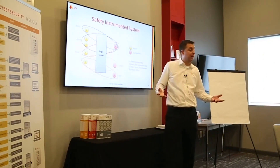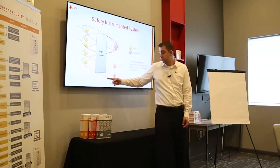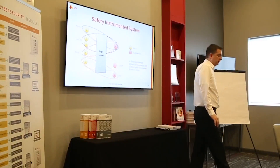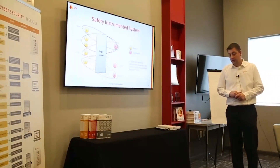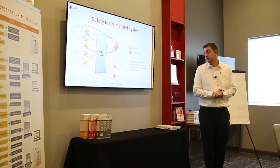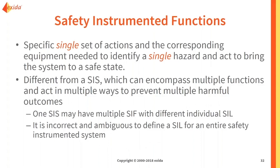For sensors, we could have a low pressure measurement doing one thing and a high pressure measurement doing something else with the same sensor, or overfill and dry run measured with the same level instrument — different actions, but the same instrument. So when we talk about safety instrumented functions, there is always a single set of actions and corresponding equipment to identify a single hazardous event and bring it to safe state. We assign SIL levels to individual SIFs, not to the entire safety instrumented system.